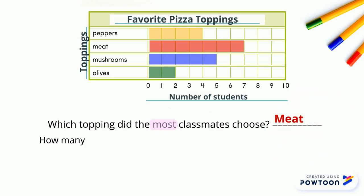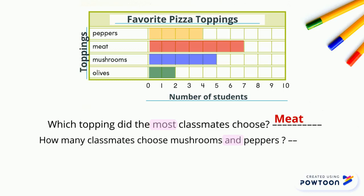Second question: how many classmates chose mushrooms and peppers? 'And' is a keyword for plus, so we will add the number of peppers plus the number of mushrooms. The answer will be four plus five, which equals nine.